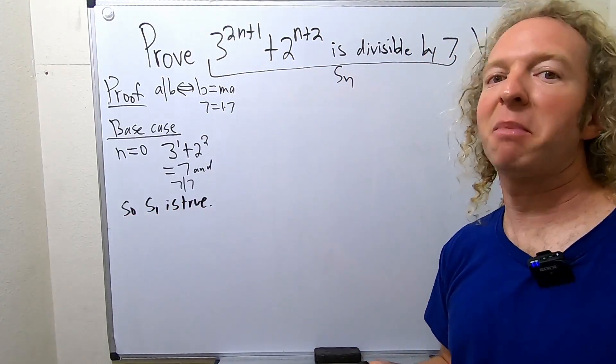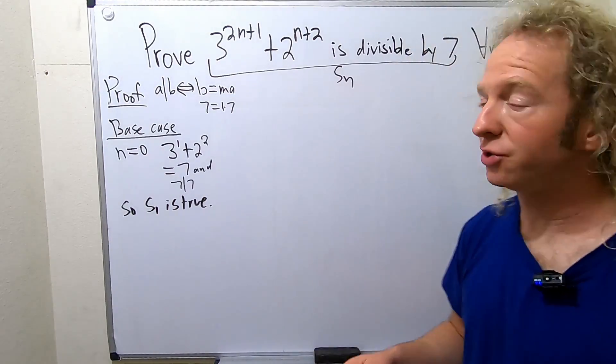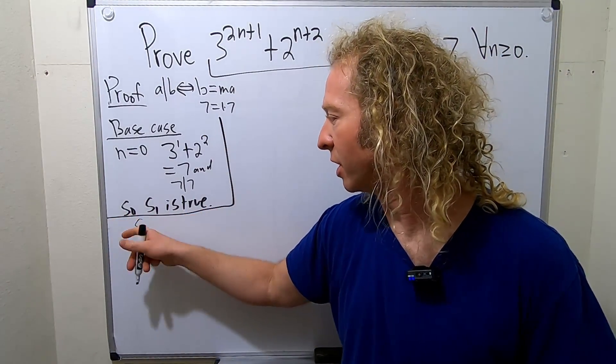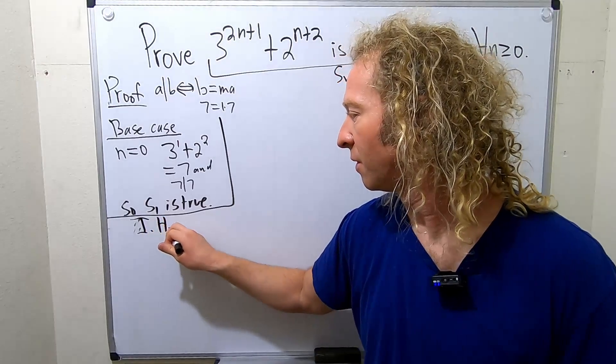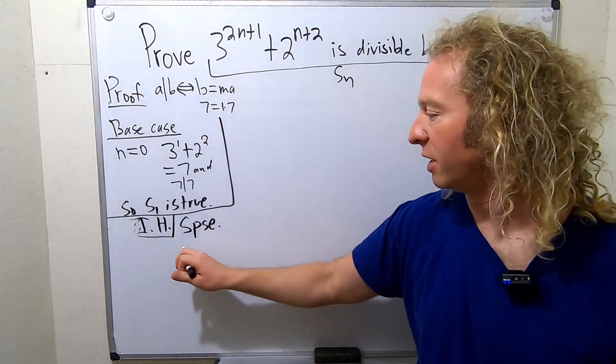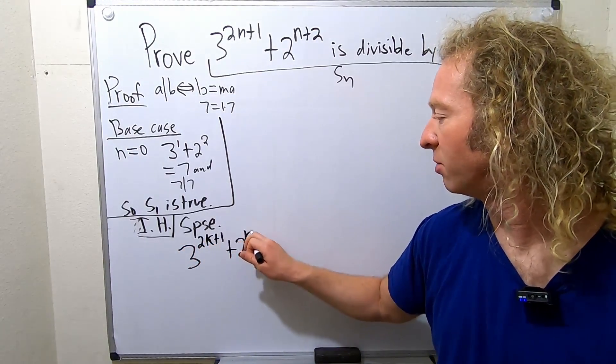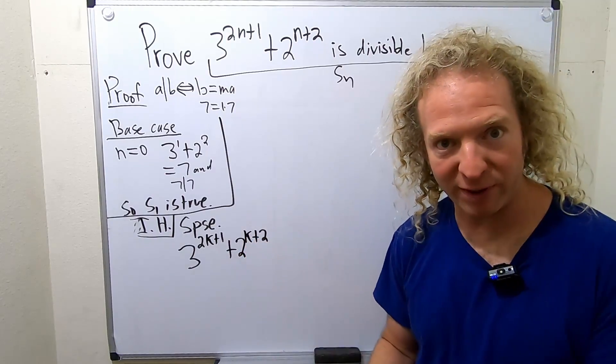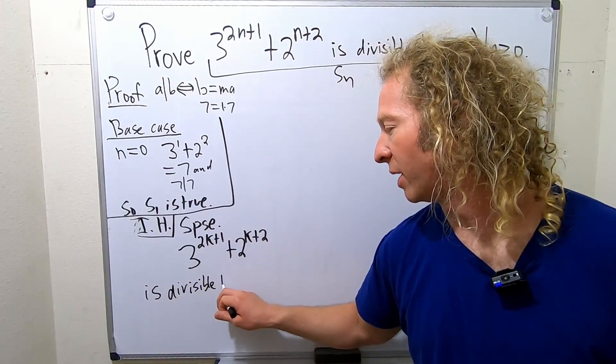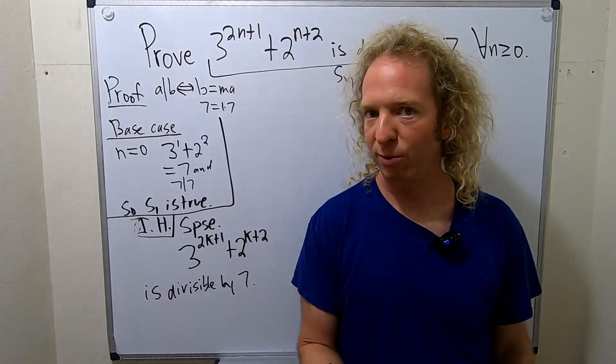So now we have to write down the induction hypothesis. That's basically where we assume that our statement is true for some integer k greater than or equal to 0. So let's do that. So I'm going to squeeze it in over here. Induction hypothesis. So we say, suppose that this guy here, so 3 to the 2k plus 1 plus 2 to the k plus 2 is divisible by 7. So we get to assume that it's divisible by 7.